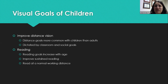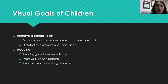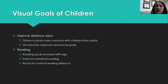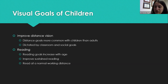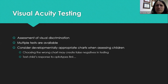Children typically have different visual goals than adults. Kids often prioritize improving distance vision, which relates to classroom settings and social activities — like seeing animals at the zoo on a field trip. As kids get older and their workload changes, reading becomes a more prominent goal. A kindergartner has short near-task goals, while a sixth or eighth grader may need more sustained reading. It's important to track how their goals change as they develop from year to year.